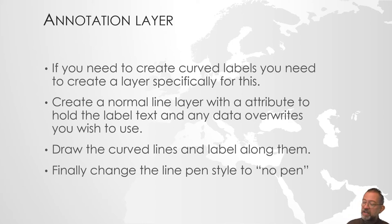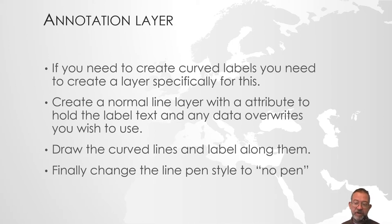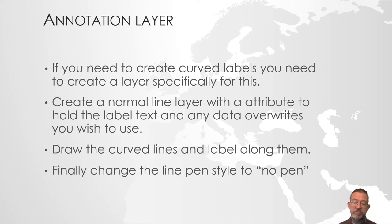No matter how many tricky overwrites we can do, we're not able to make labels on non-straight lines. And that's where we will need to use an annotation layer. An annotation layer is a standard layer that you're only going to use for labelling purposes.